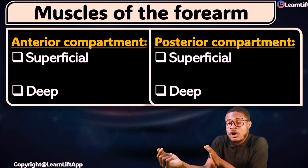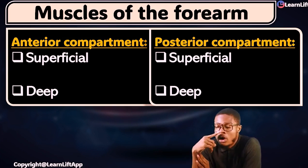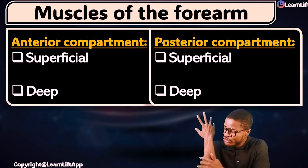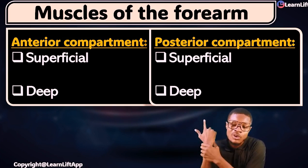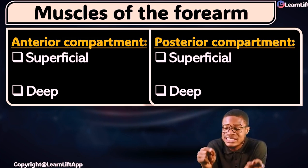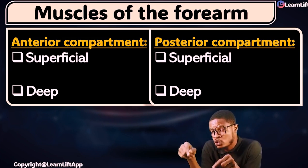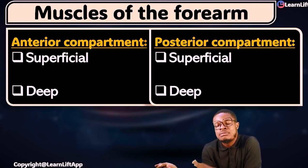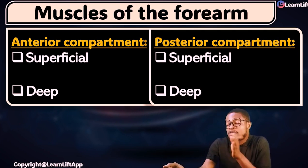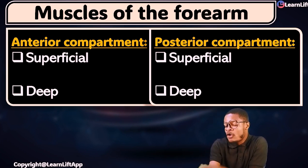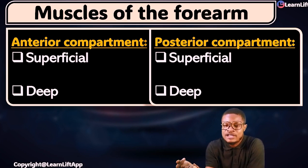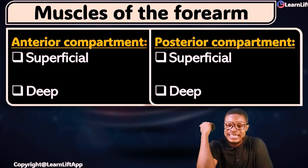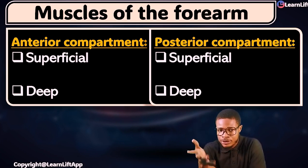Anything anterior compartments — all of them are flexor muscles. Posterior compartments — they are extensor muscles. That's the first thing you should write down in your notes. Anterior compartment muscles, whether for the arm or the forearm, they are flexor muscles. Posterior compartment muscles — they are extensor muscles.